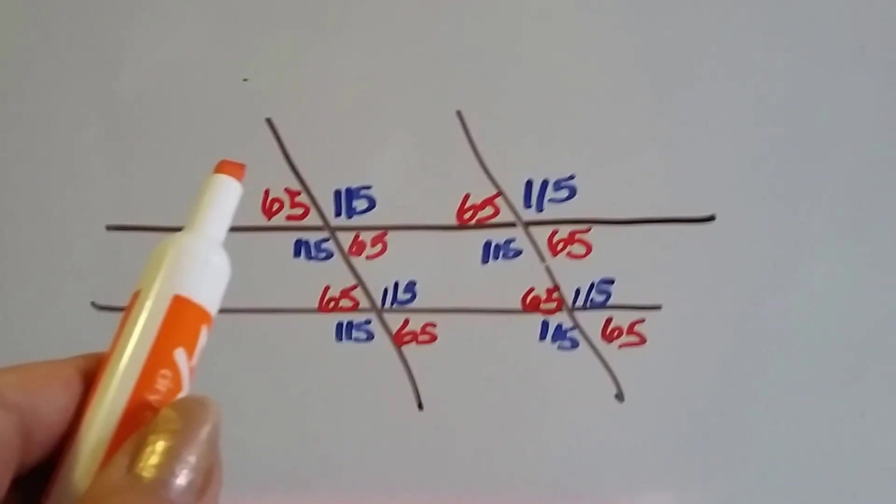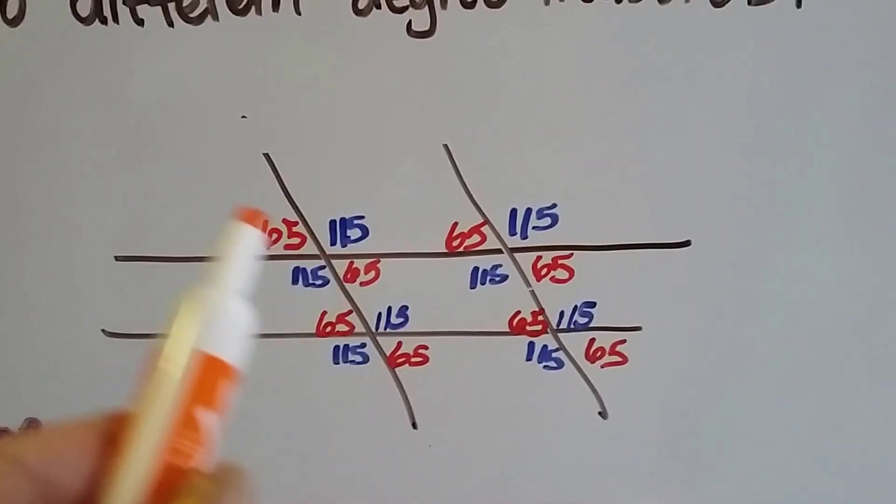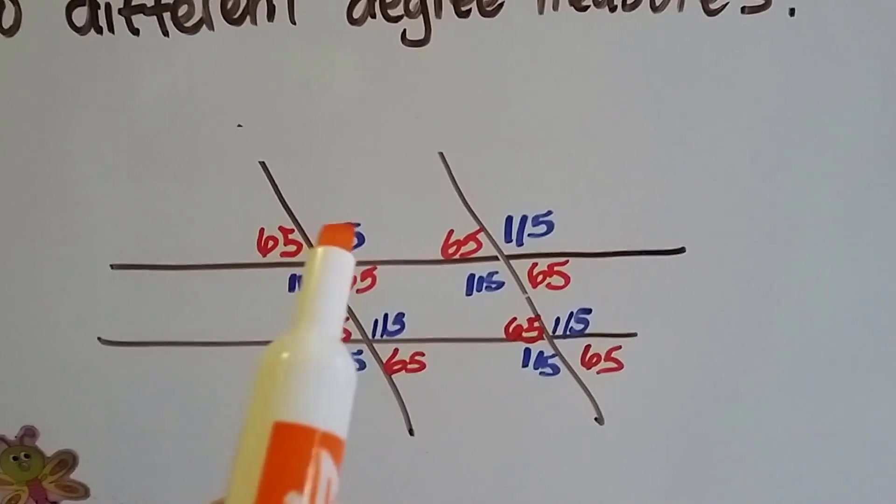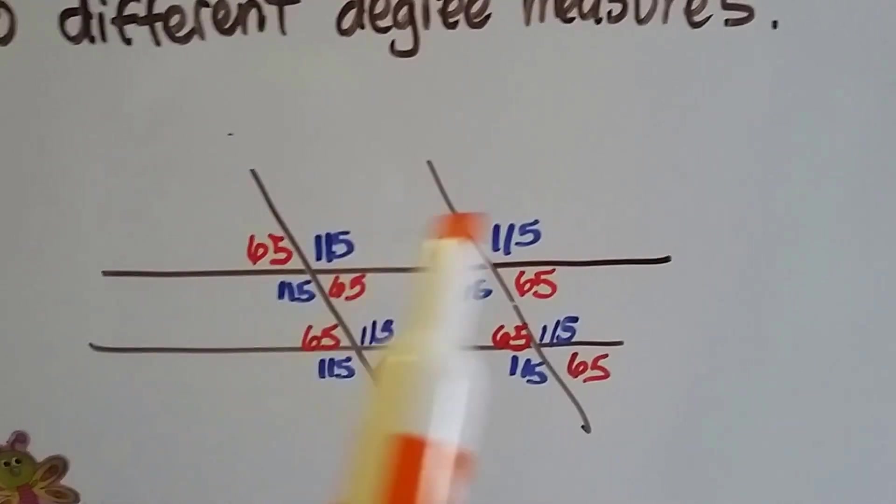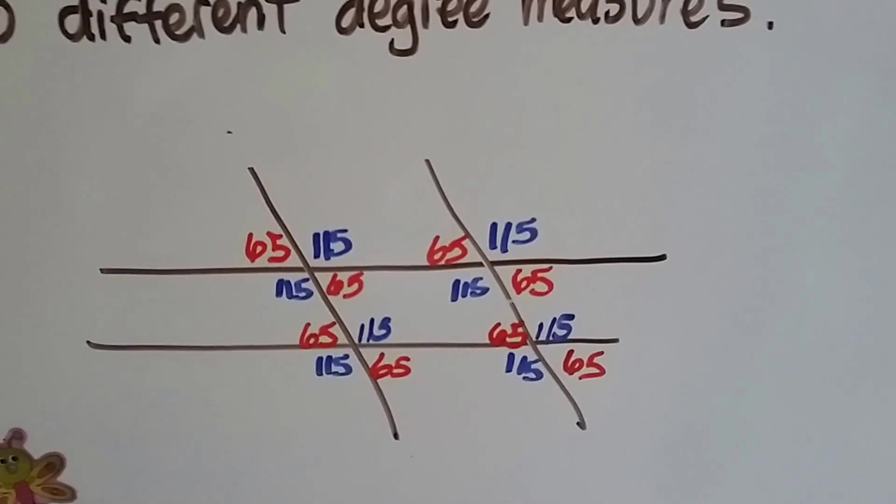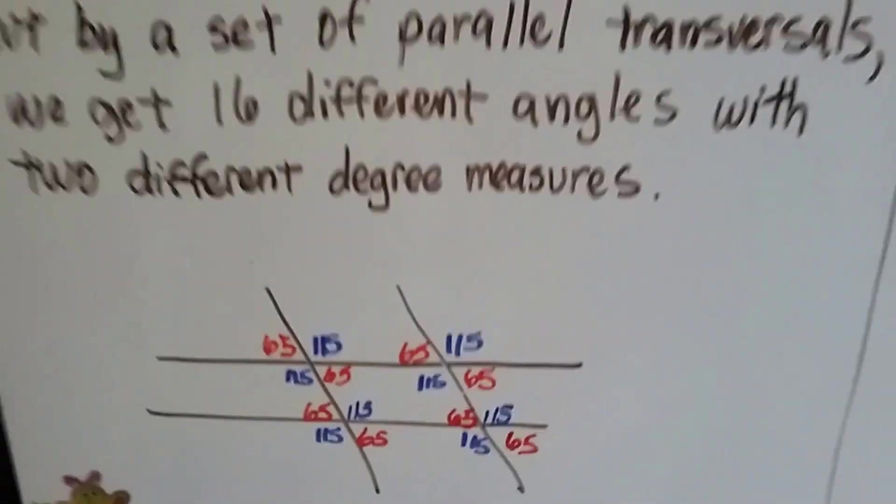If this angle is 65 degrees, well, this angle is 65 degrees. And if this one is 115 degrees, this one is 115 degrees. And we only have two measures, either 65 degrees or 115 degrees. Okay, so, quick reminder.